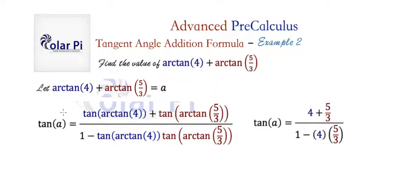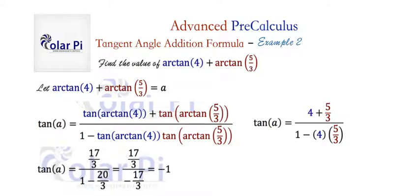Well, from here it's just simple arithmetic. And so tan(A) is equal to this here, which amounts to that, which turns to negative 1. And so since tan(A) is equal to negative 1,